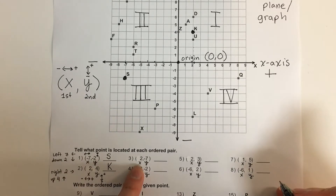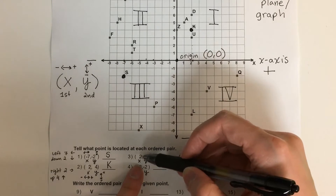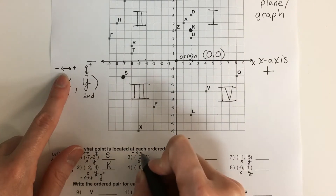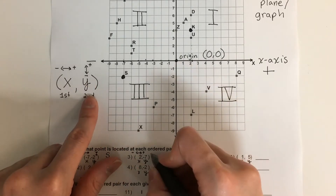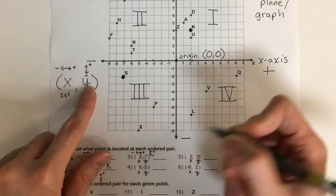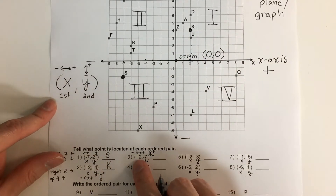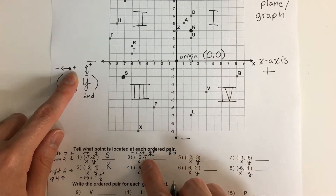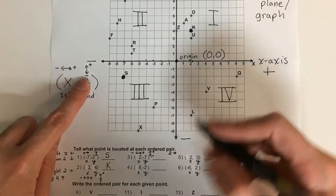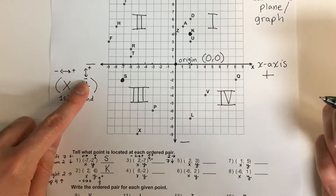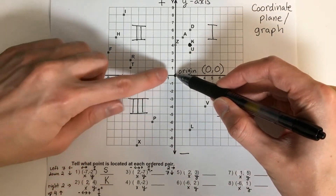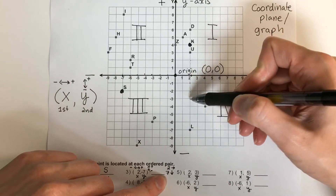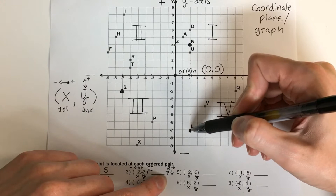Let's do number three. Two is x — x is going to be left and right. Right is positive. Y is up and down. Positive two means two to the right. And then negative seven — negative is down, so seven down. Start in the middle and go two right: one, two, three, four, five, six, seven. Seven is L.